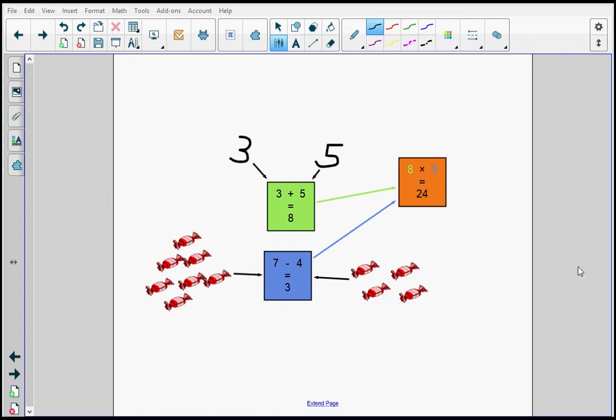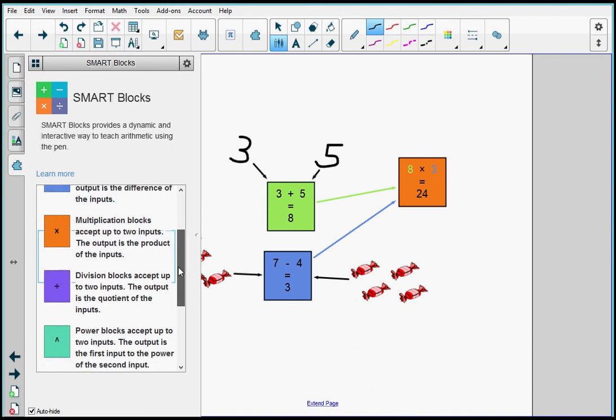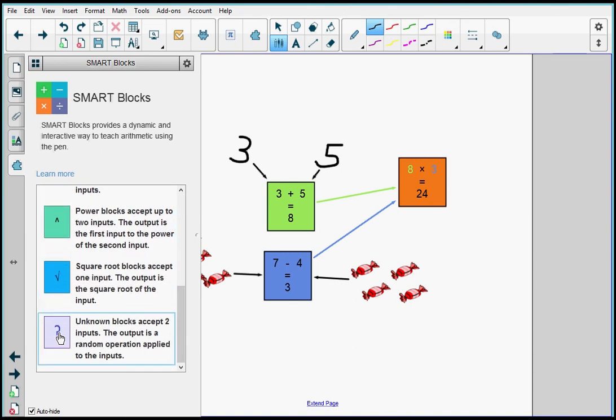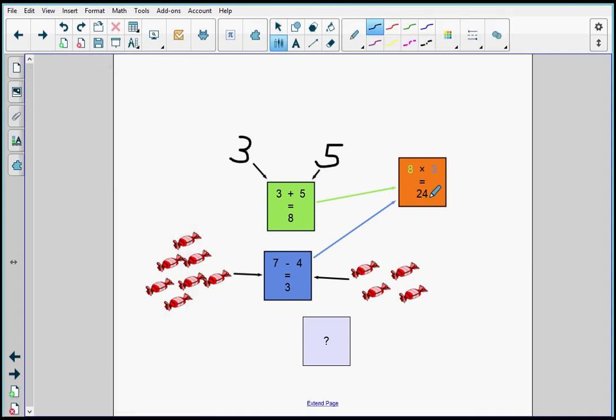One last thing I want to talk about is the unknown block. So I'm going to open my tab again. And at the very bottom, past all the math operations is an unknown block. Now what I'm going to do is I'm going to draw a line from the answer 24. So I'm going to drag that here. You can see 24 appears. And then I'm going to draw a line from the number three that I wrote here. And I'm going to drag that here. And it gives me the number eight. And then you can ask your students what operation is this answer for.